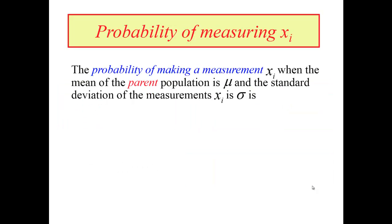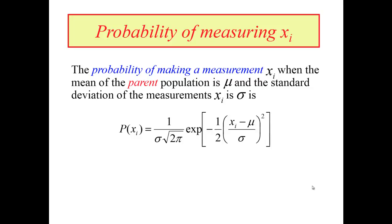To do this, we're going to assume that we have a Gaussian distribution in our set of measurements. The parent population then corresponds to a Gaussian distribution characterized by a mean mu and a standard deviation sigma. If that's the case, then the probability of making a measurement x sub i from this distribution is given by the familiar form of the Gaussian distribution.